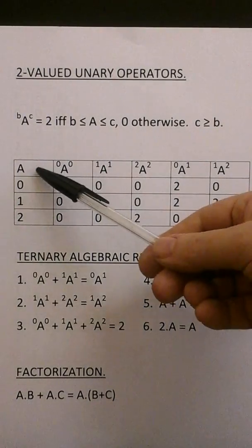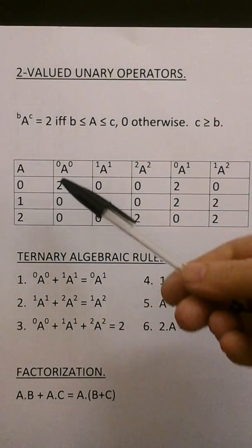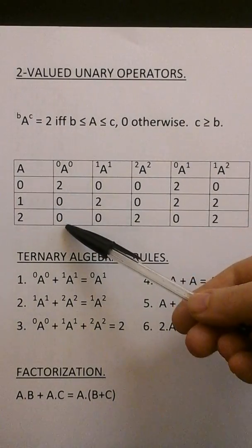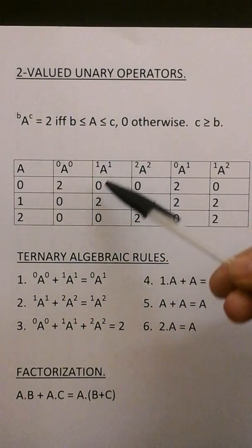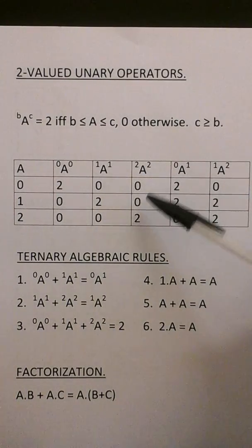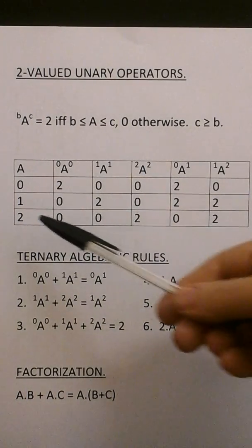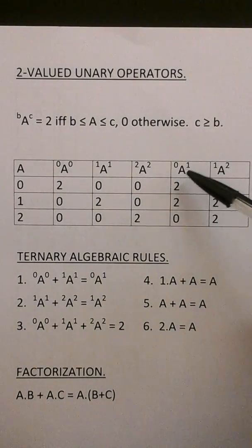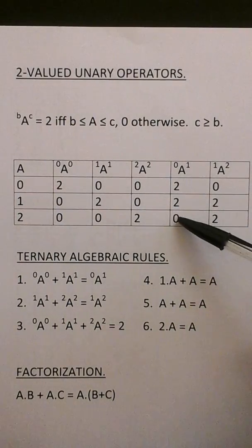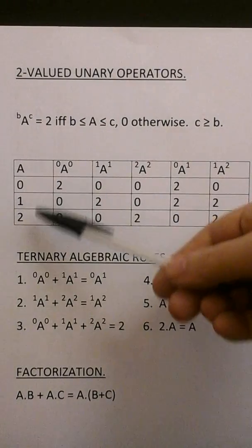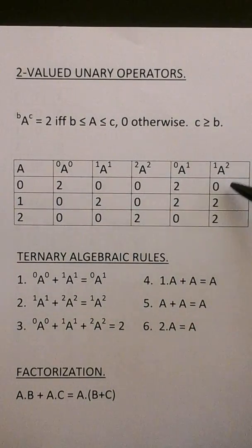So here are a few examples. This is A and 0, 1, 2. A, 0, 0 is a 2 when A equals 0 and a 0 otherwise. A, 1, 1 is a 2 when A equals 1 and 0 otherwise. A, 2, 2 is a 2 when A equals 2 and 0 otherwise. A, 0, 1 is a 2 at 0 and 1 and 0 at 2. A, 1, 2 is a 2 at A equals 1, 2 and 0 at A equals 0.